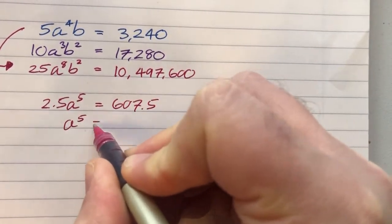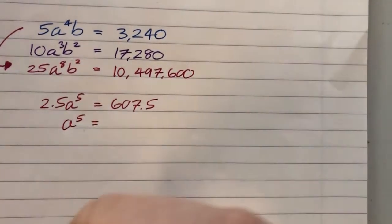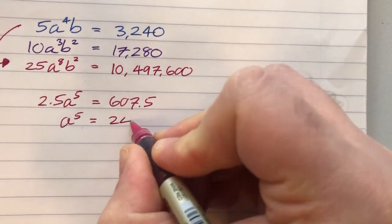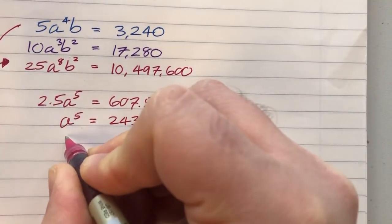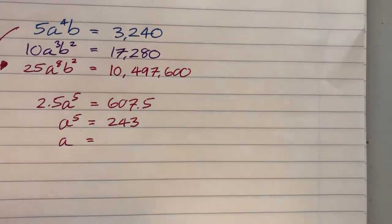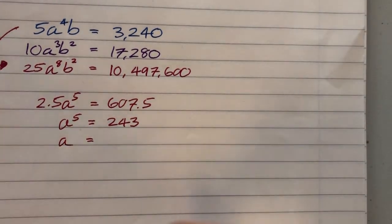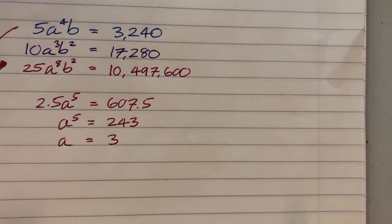Divide both sides by 2.5. That gives me 243. And then if I take the fifth root of that, so that's the power of 0.2, I will get the answer 3. So a is 3.